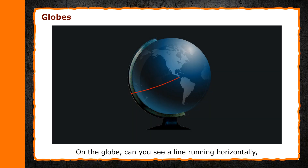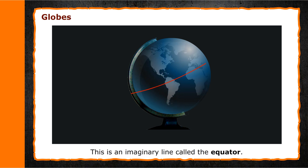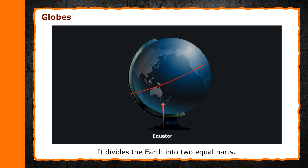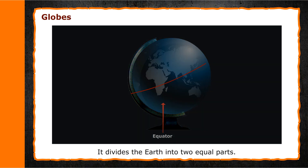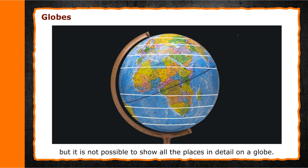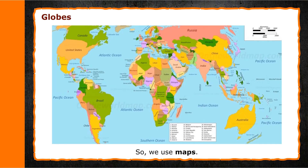On the globe, can you see a line running horizontally which divides the globe into two equal halves? This is an imaginary line called the equator. It divides the earth into two equal parts. Our earth has many places on it, but it is not possible to show all the places in detail on a globe. So, we use maps.